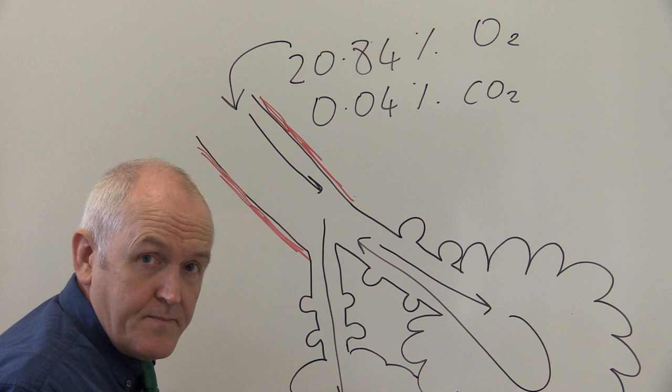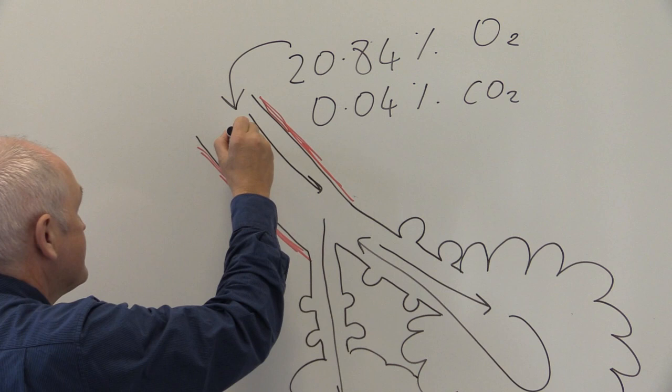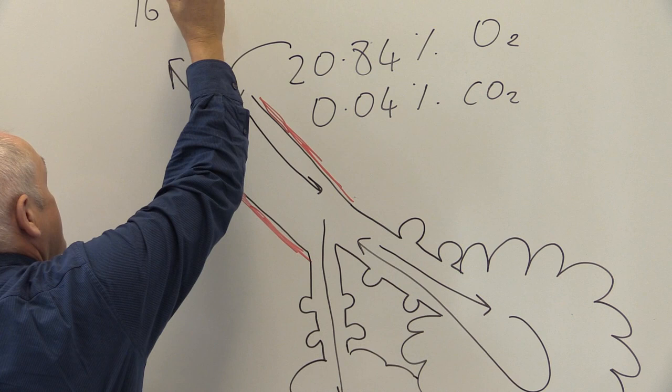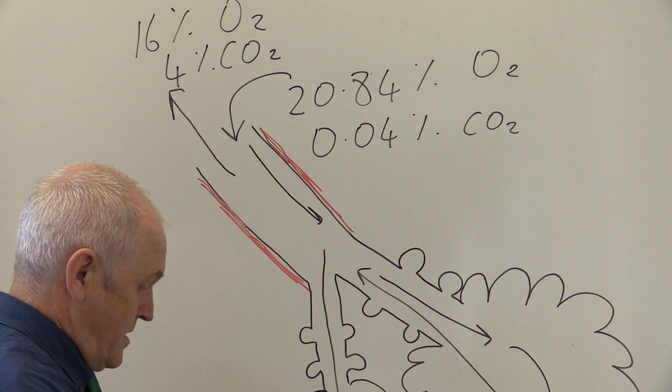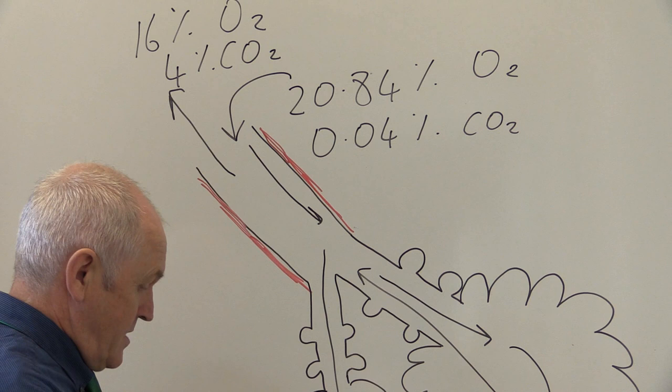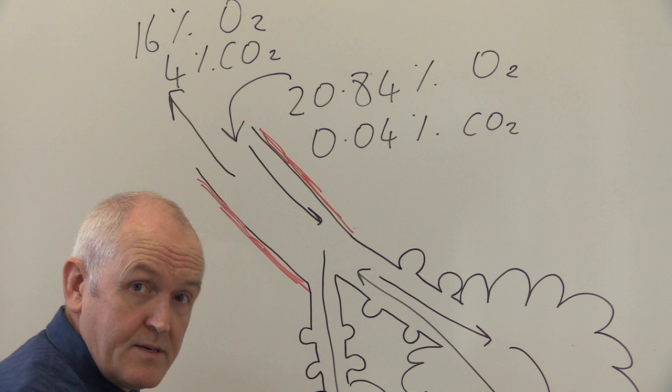The air that we breathe out is going to be much lower in oxygen — maybe around 16% — and much higher in carbon dioxide, maybe about 4%. This is because the oxygen is absorbed into the blood and the carbon dioxide is excreted from the blood into the air in the alveoli.